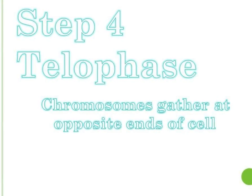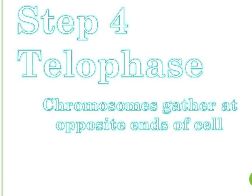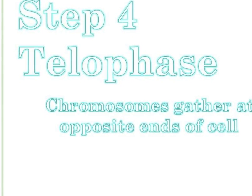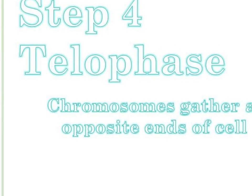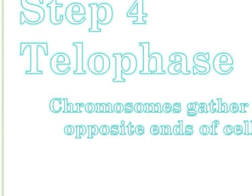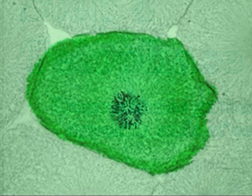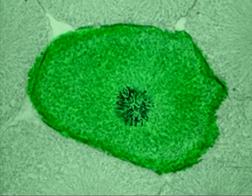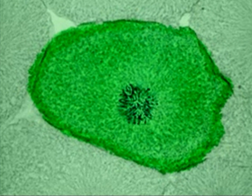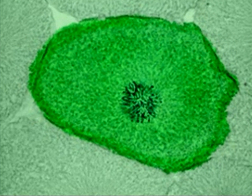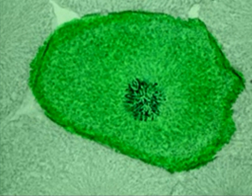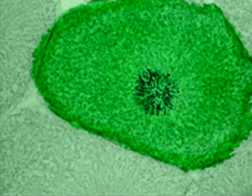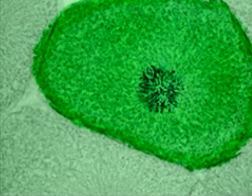Chromosomes begin to disperse into a tangle of dense material. A nuclear envelope reforms around each cluster of chromosomes. The spindle begins to break apart, and the nucleolus becomes visible in each daughter nucleus.